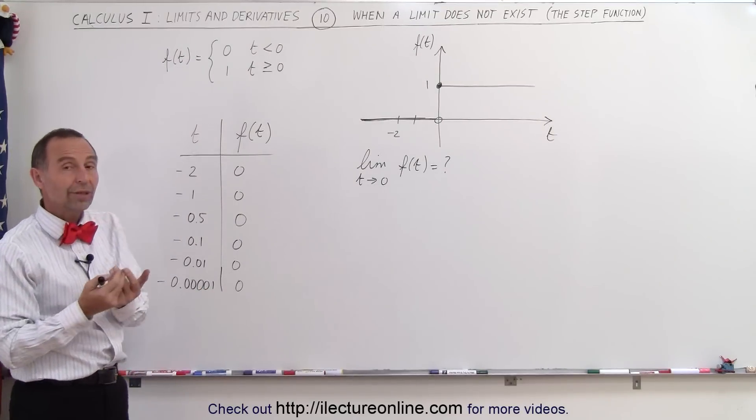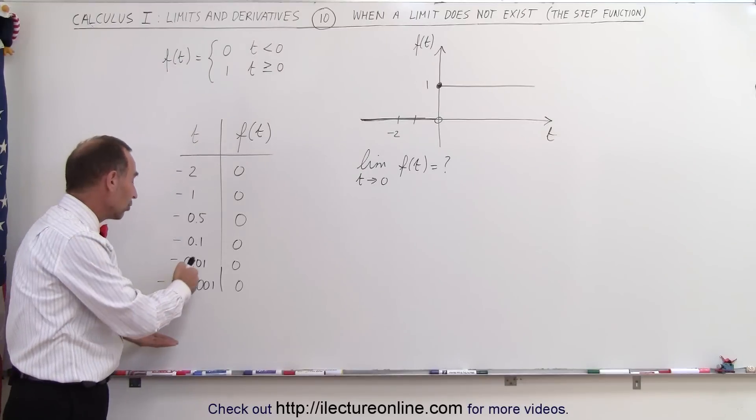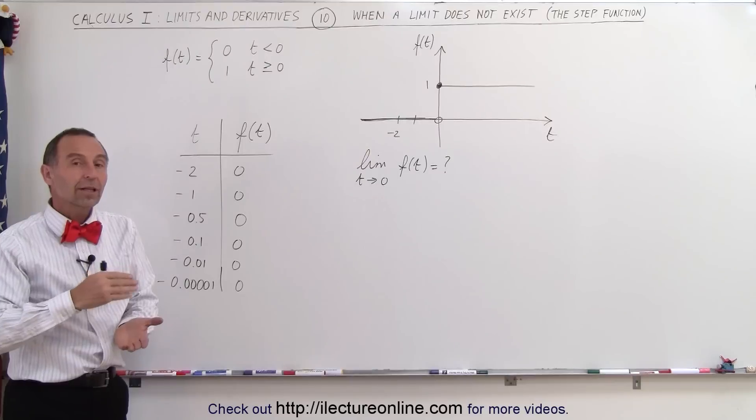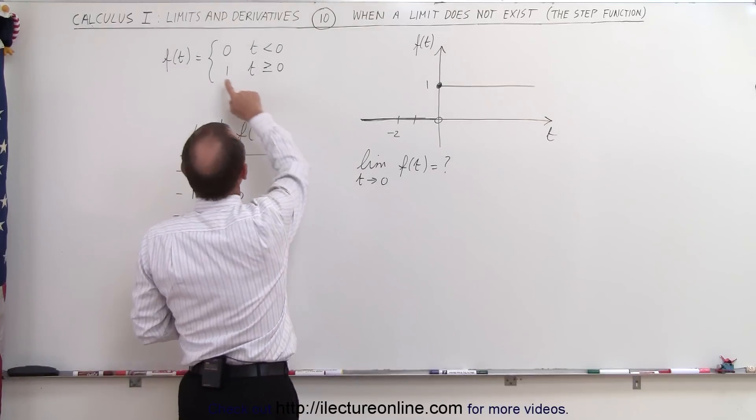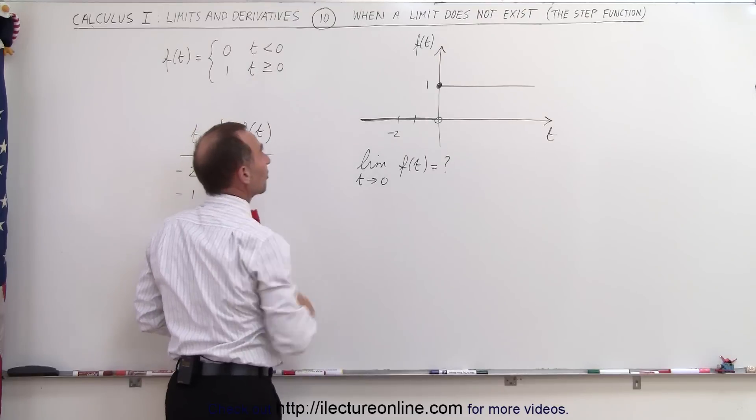So therefore, it would be assumed that the limit as t approaches 0, the limit would be 0. But then we see that when we plug in 0 for t, the function actually becomes 1.